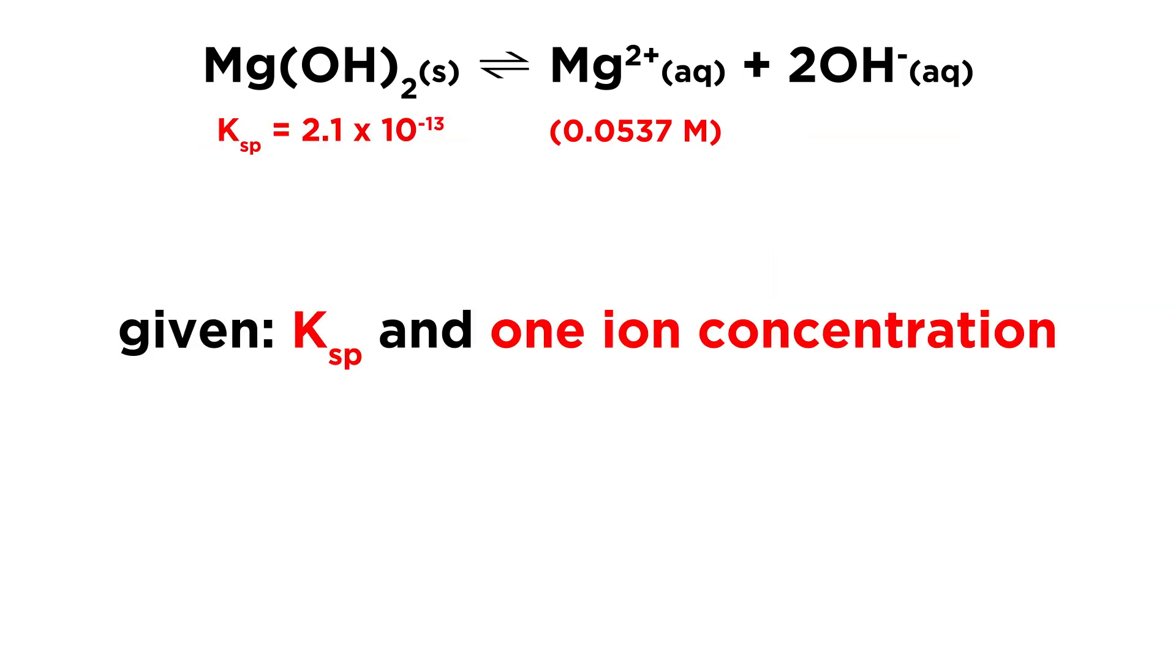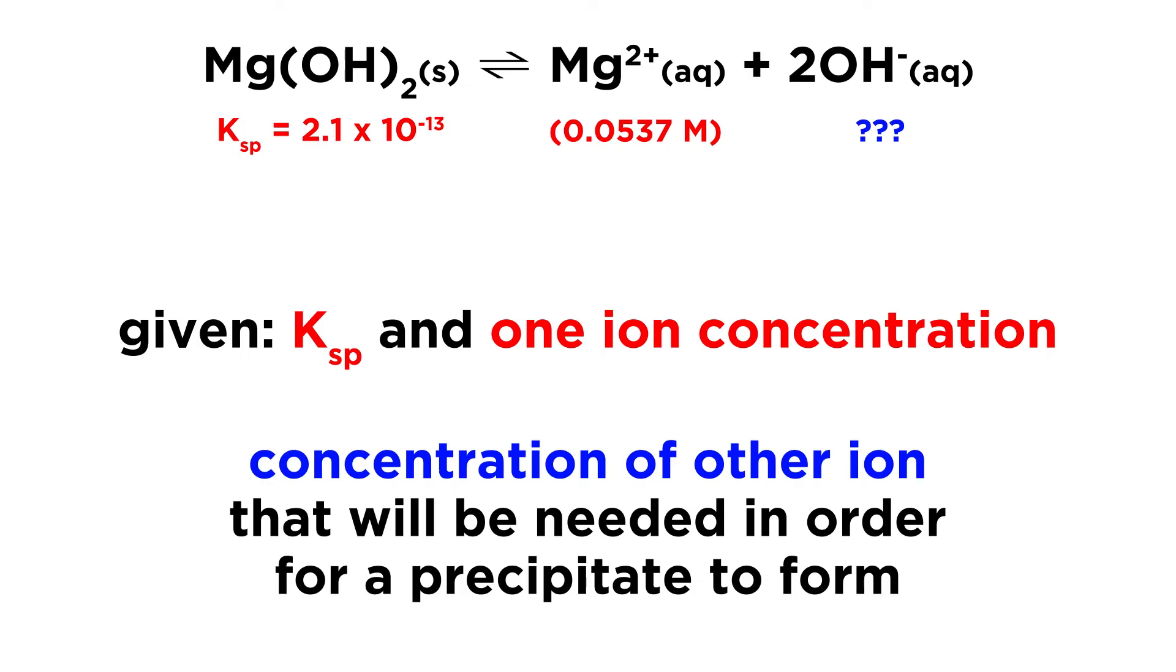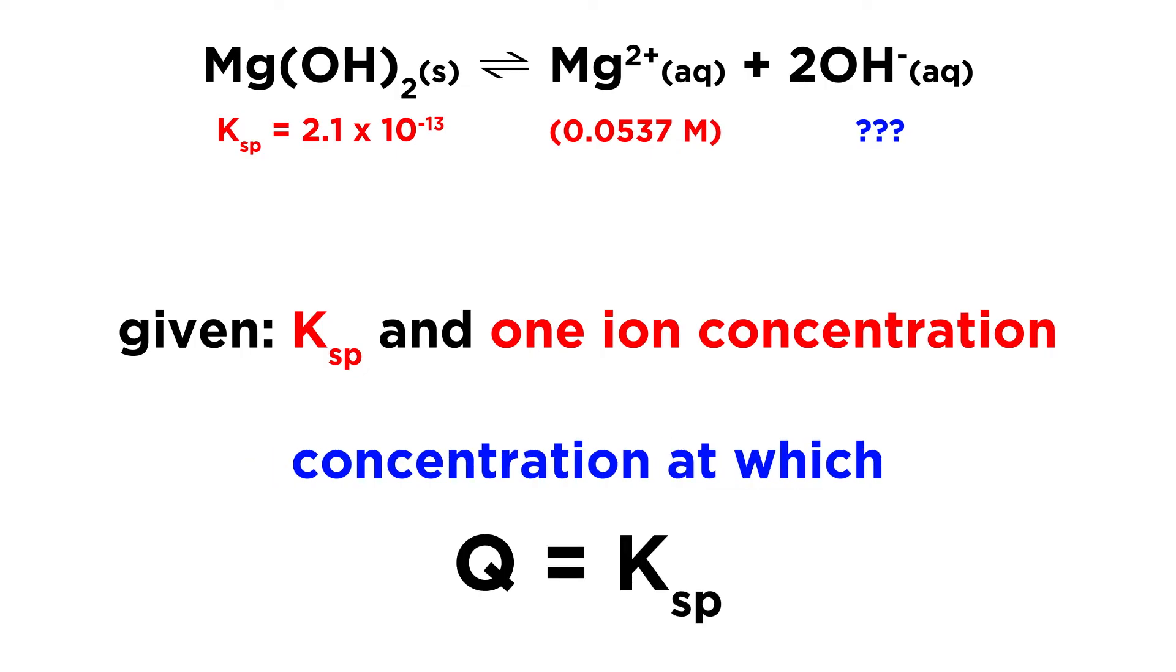This also means that given a Ksp and one ion concentration, we can calculate the concentration the other ion will need to reach in order for precipitation to begin to happen. We just need to find the concentration at which Q will become equal to Ksp.